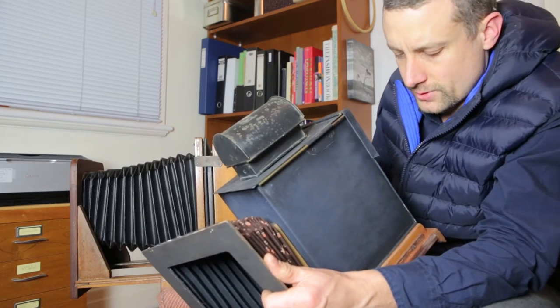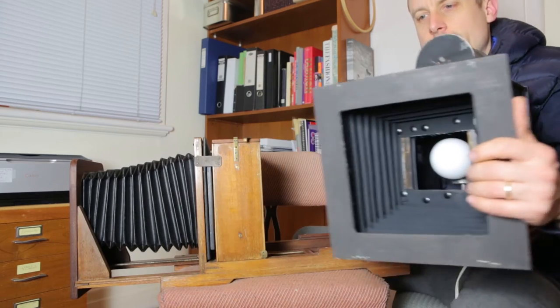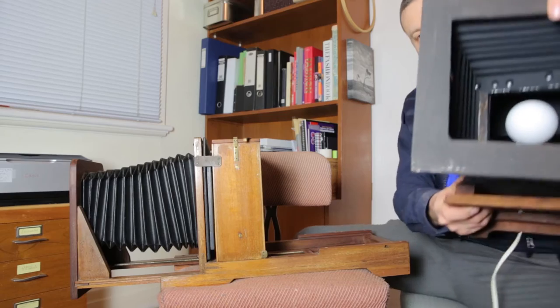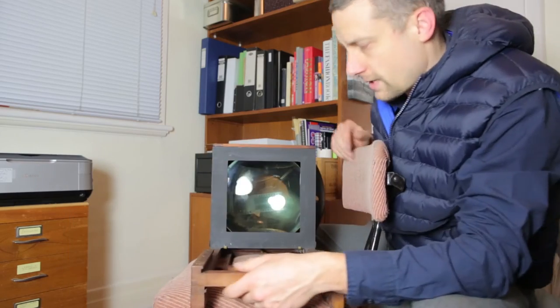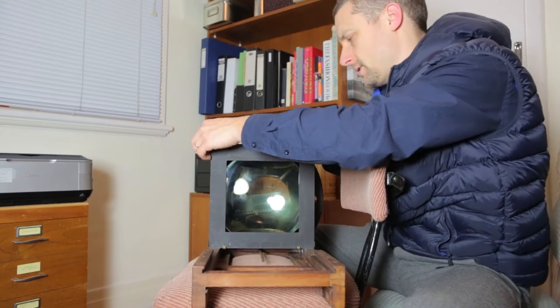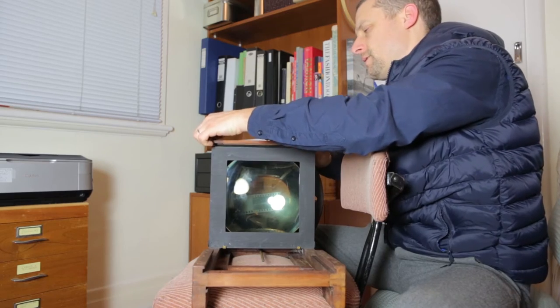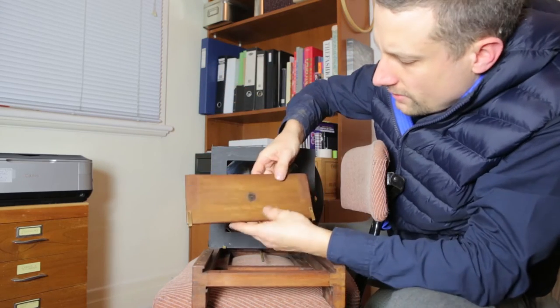This would once have had a worm screw that winds it in and out for focus, but it's broken off and it's gone. So there's one of the two condenser lenses. You can pop that out. That's where they get removed. That's the lid.